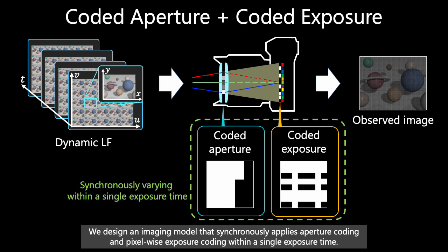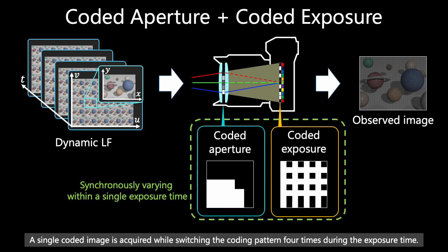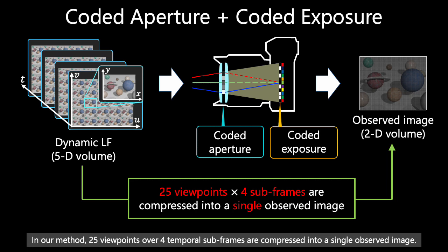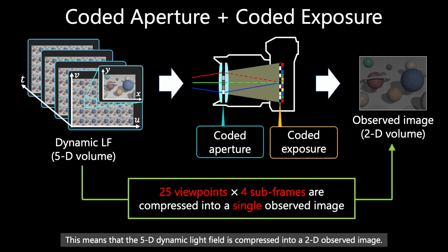A single coded image is acquired while switching the coding patterns 4 times during the exposure time. In our method, 25 viewpoints over 4 temporal subframes are compressed into a single observed image. This means that the 5D dynamic light field is compressed into a 2D observed image.